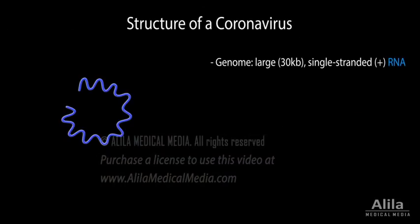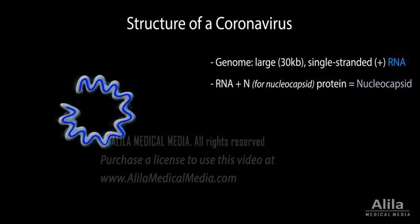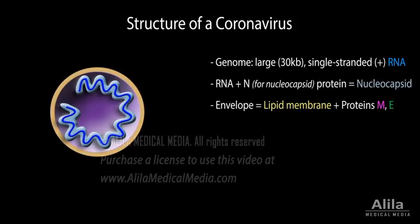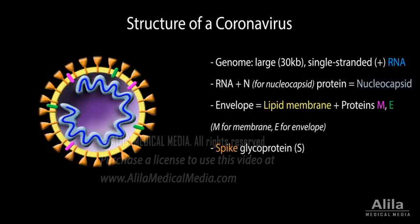The coronavirus genome is a large, single-stranded, positive-sense RNA molecule that contains all information necessary for the making of viral components. The RNA is coated with structural proteins, forming a complex known as the nucleocapsid. The nucleocapsid is enclosed in an envelope, which is basically a lipid membrane with embedded proteins. From the envelope, club-like spikes emanate, giving the appearance of a crown.